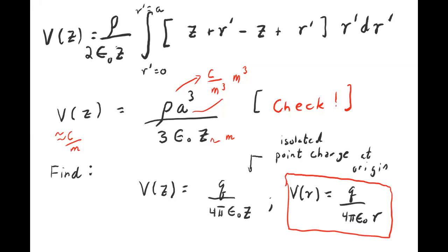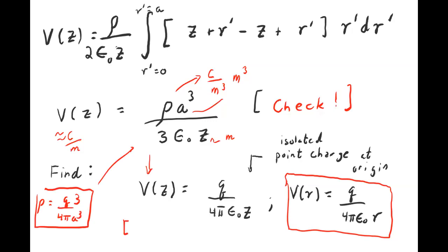Rewriting in terms of total charge Q, since ρ = Q/(4πa³/3) = 3Q/(4πa³), this expression becomes V = Q/(4πε₀z), which is exactly the electrostatic potential of an isolated point charge. Replacing z by r, we get the familiar result. The electric field is then E = Q/(4πε₀r²) r̂, as expected — and this is all true for points outside the sphere.